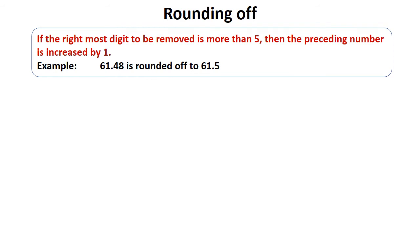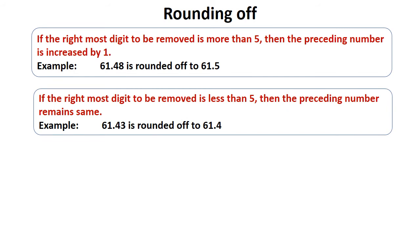So the preceding number, which is 4, is increased by 1, and the number becomes 61.5. Second rule: if the rightmost digit to be removed is less than 5, then the preceding number remains the same. For example, in 61.43, it is rounded off to 61.4, because the rightmost digit is 3, which is less than 5, so the preceding number 4 remains the same.